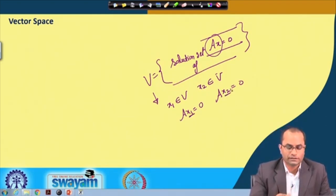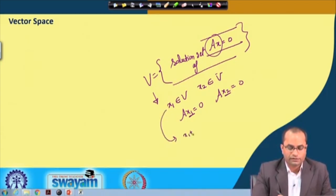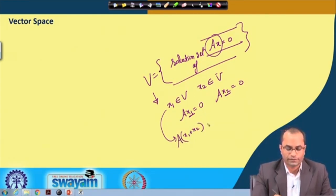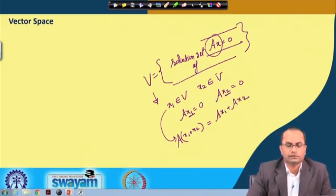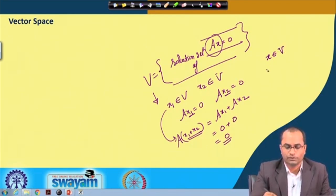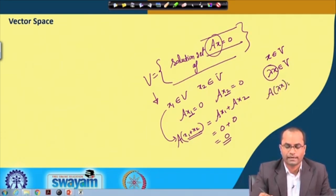If we take two elements of this set and add them, x1 + x2 is also a solution of Ax = 0 because of the linear property: A(x1 + x2) = Ax1 + Ax2 = 0 + 0 = 0. Not only this, if we take any element and multiply by a real number lambda, then lambda·x will also belong to V, since A(lambda·x) = lambda·Ax = lambda·0 = 0.